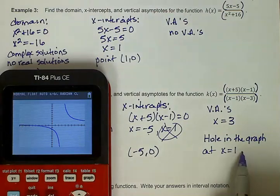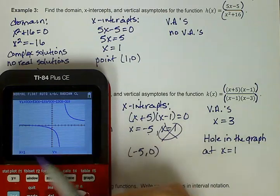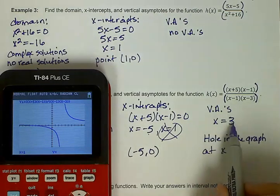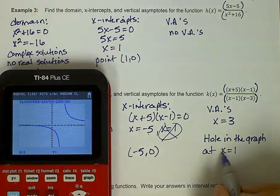The one thing the calculator doesn't do a good job of showing you is holes in the graph, but you can actually verify that there's a hole in the graph at that point. If I do a trace for this graph, and if I put in 1 for x, what it's going to give me is a blank for my y. That means that the function's not defined there. I would also get the same thing if I put in 3 for x, because the function wasn't defined there either. We could see what's happening close to x equals 1.